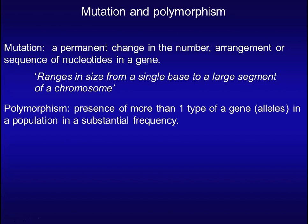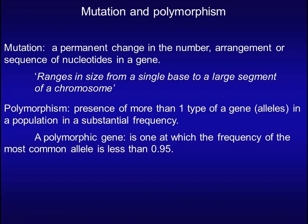Polymorphism, on the other hand, is the presence of more than one type of gene in a population at a substantial frequency. A polymorphic gene is one at which the frequency of the most common allele is less than 95%.